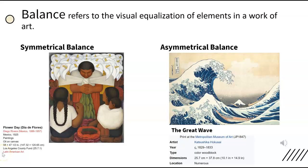Balance refers to the visual equalization of elements in a work of art. Diego Rivera's painting on the left uses symmetrical balance. You can draw a vertical line of symmetry down the center and the two sides are very similar. Notice they are not perfectly alike. While a perfectly symmetrical artwork would also have symmetrical balance, a piece like this, which is nearly symmetrical, is also considered to have symmetrical or formal balance.